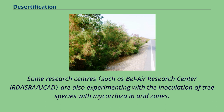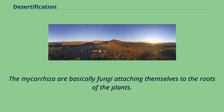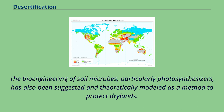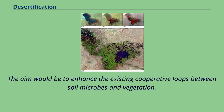Some research centers are experimenting with the inoculation of tree species with mycorrhiza in arid zones. Mycorrhiza are fungi attaching themselves to the roots of plants, creating a symbiotic relation with the trees and greatly increasing the surface area of their roots. The bioengineering of soil microbes, particularly photosynthesizers, has also been suggested and theoretically modeled as a method to protect drylands, with the aim of enhancing existing cooperative loops between soil microbes and vegetation.